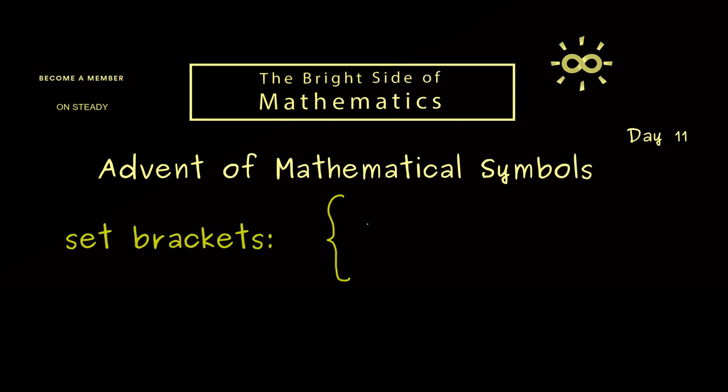For example, you often see something like this: after the set bracket we have a function f of x, and then on the right you see a vertical line or a colon. Moreover, next to it you find something like x is an element in a set A. Of course there could be more conditions than this, but in the end we have a closing set bracket.